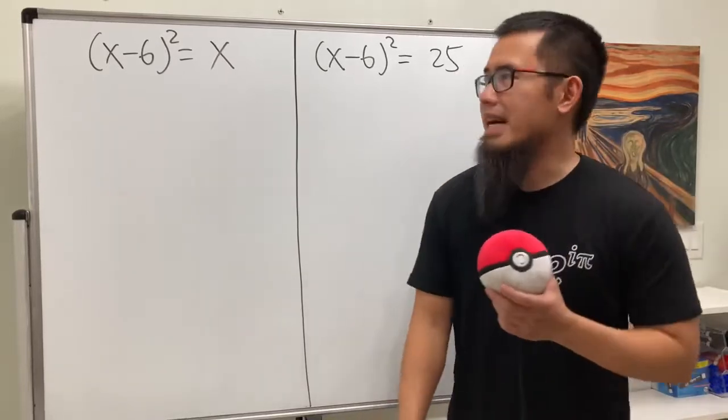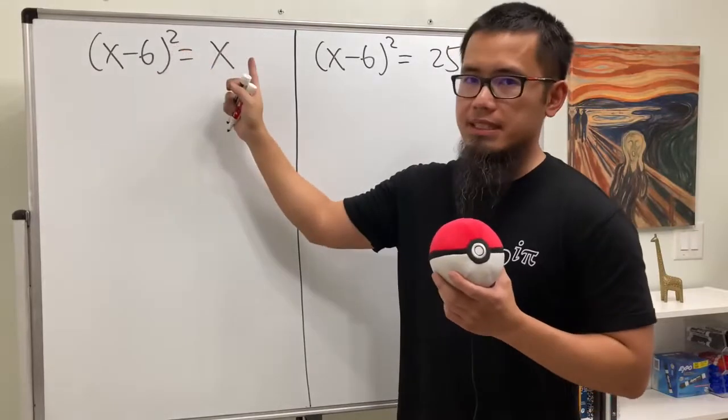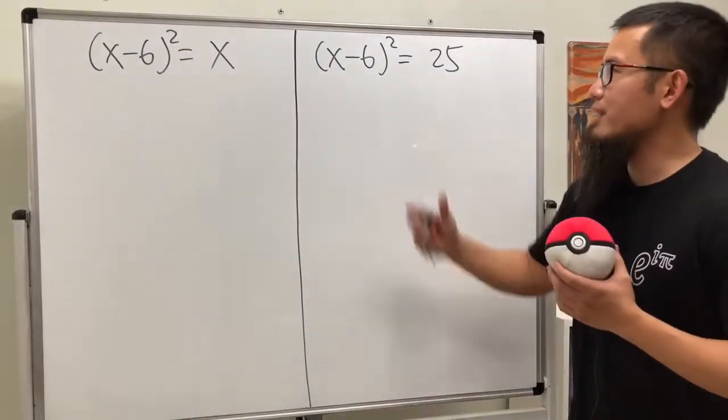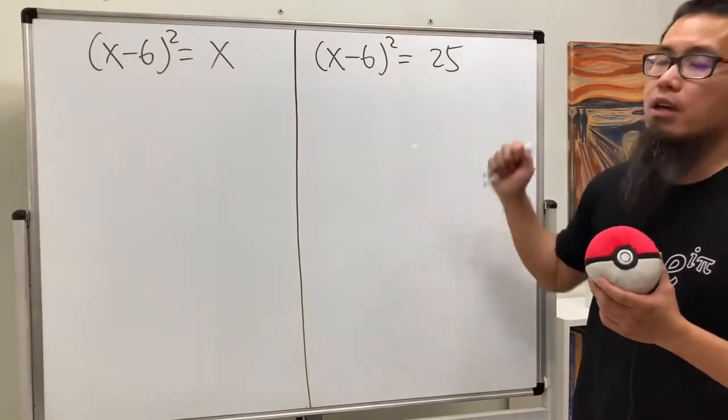Two quadratic equations on the spot. The first one is x minus 6 in parentheses, and then we square that, and that's equal to x. And for the second one, same thing on the left-hand side, but on the right-hand side, we have the number 25.